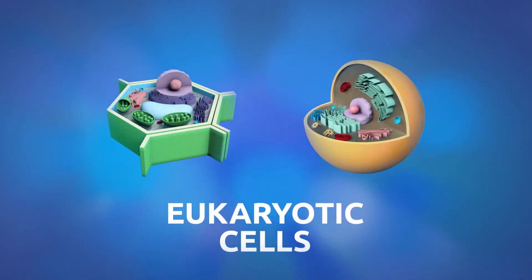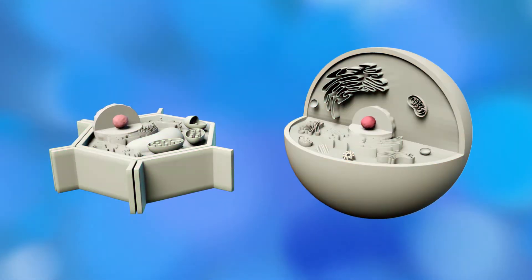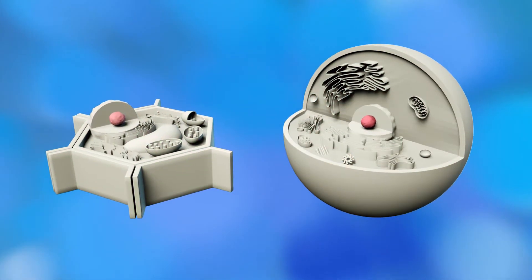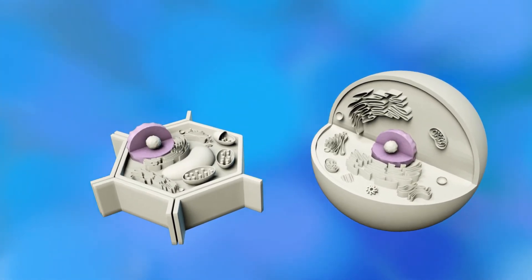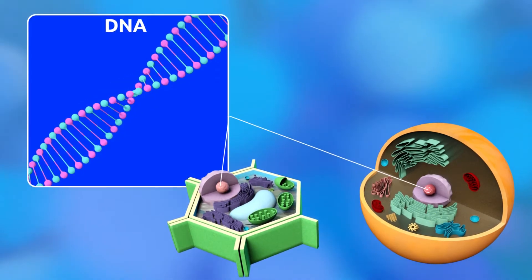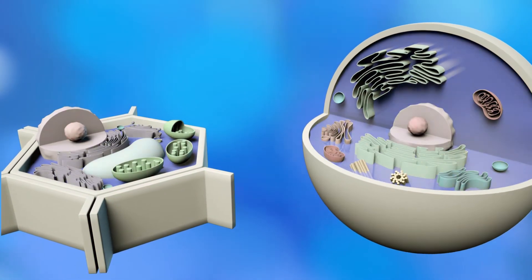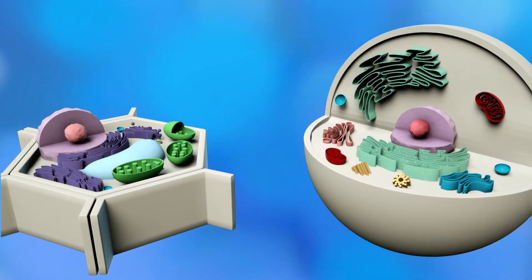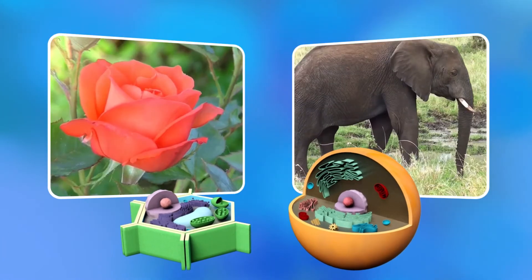Eukaryotic cells have a nucleus protected by a membrane. DNA, which contains genetic material, is found inside the nucleus. Organelles are found in the cytoplasm of eukaryotic cells.